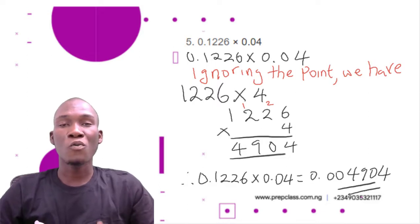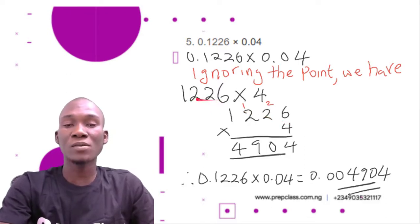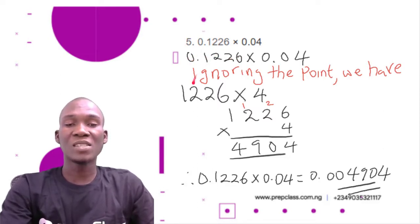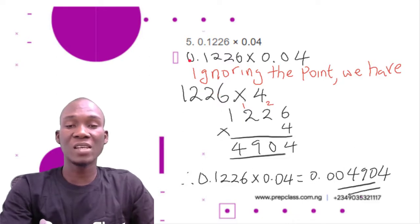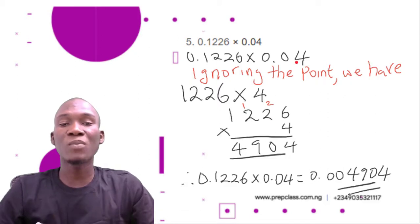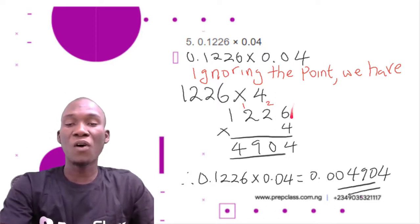We follow the same process as the previous question. For 0.1226, ignoring the point gives 01226 — since the leading zero is invalid, we have 1226. For 0.04, ignoring the point gives 004, which equals 4. So we multiply 1226 by 4. Starting: 4 × 6 = 24, write 4 carry 2.